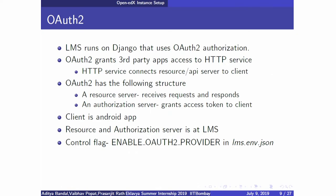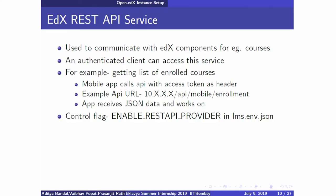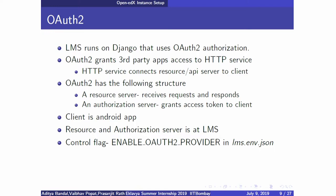The app uses two components from edX: OAuth2 and the edX REST API service. OAuth2 authenticates a client to use the REST API service. edX provides a list of APIs — for accessing discussions, comments, and course enrollments for a particular user. The behavior of these is controlled by two flags: enable_oauth2_provider and enable_mobile_api in lms.env.json.